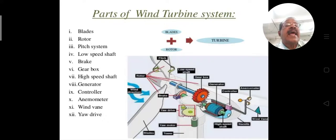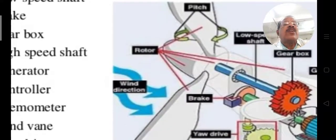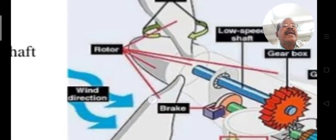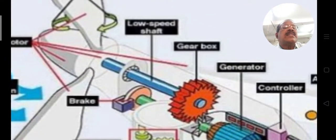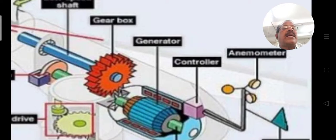Here in this diagram, a three-blade system is shown. The rotor is connected to the end of the blade system, and the low speed shaft is connected to the gearbox. The gearbox is connected to a generator. The generator has a speed controller, and an anemometer is connected to measure the wind speed.